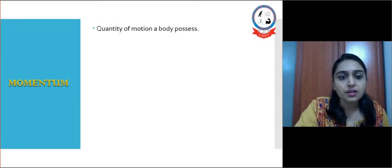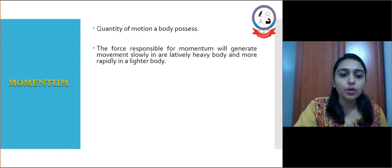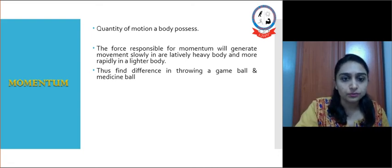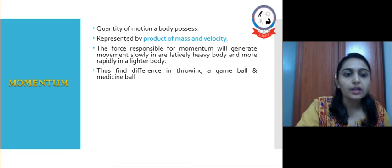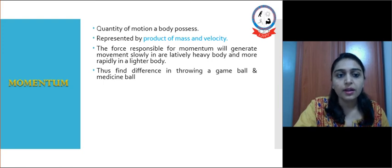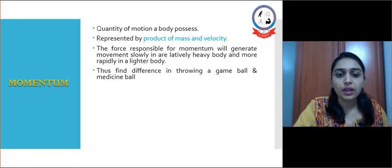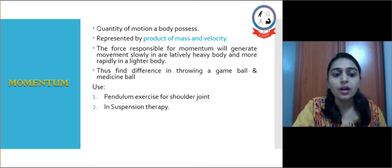Next is momentum, which is the quantity of motion a body possesses. The force responsible for momentum will generate movement slowly in a relatively heavy object and more rapidly in a lighter object. For example, we find it easier to throw a game ball than a medicine ball. Momentum is represented by the product of mass and velocity — the heavier the object, the less the momentum, and the lighter the object, the more the momentum. The use of momentum in physiotherapy includes pendulum exercises of the shoulder joint as well as suspension therapy.